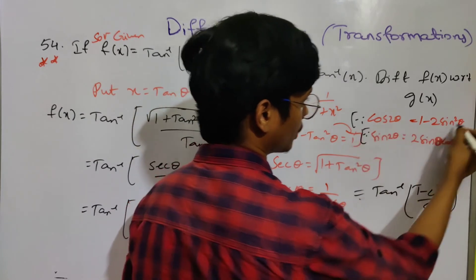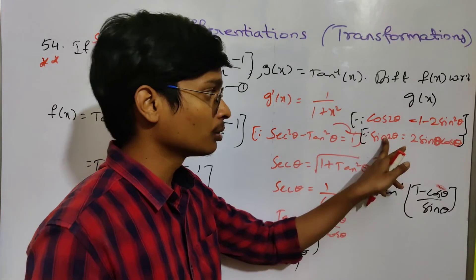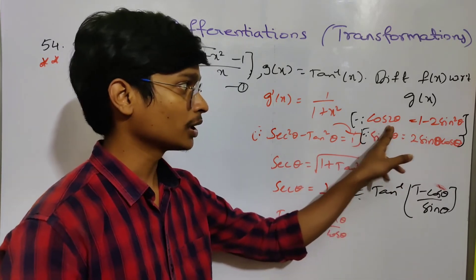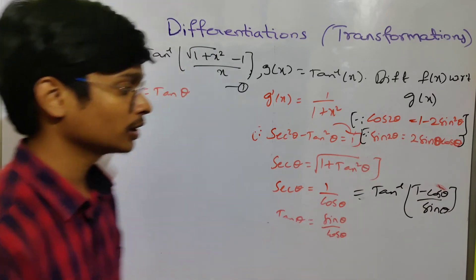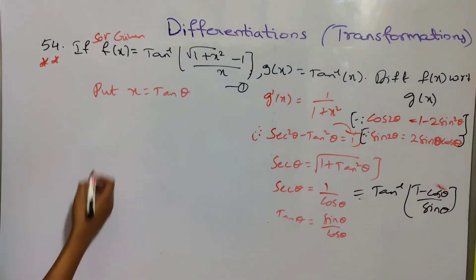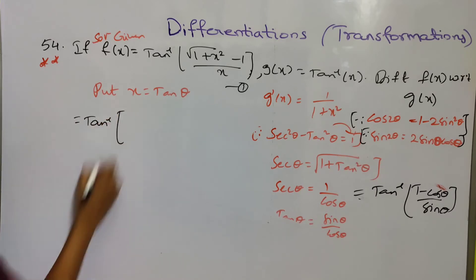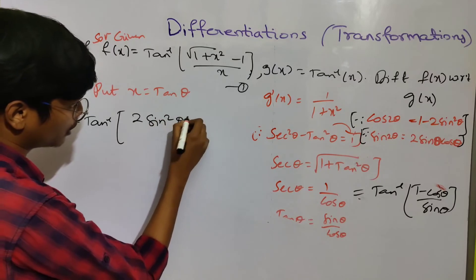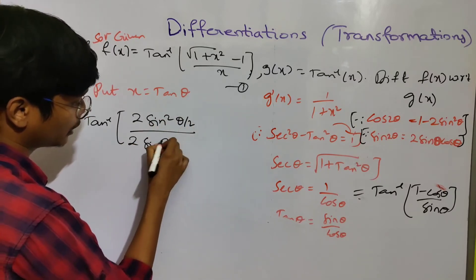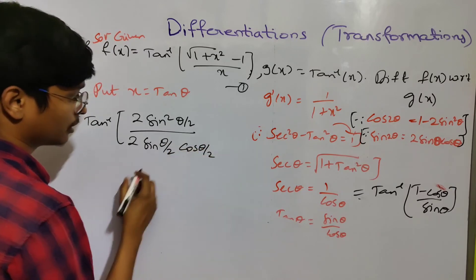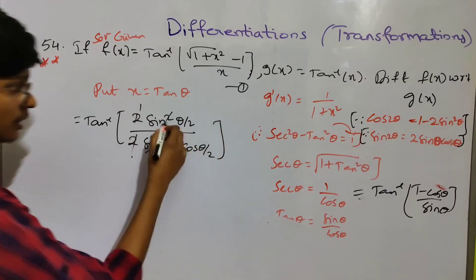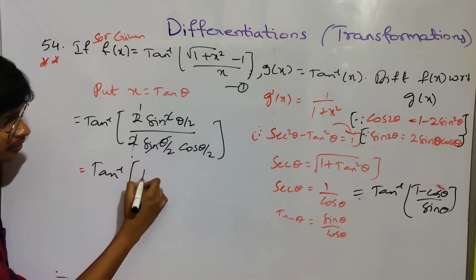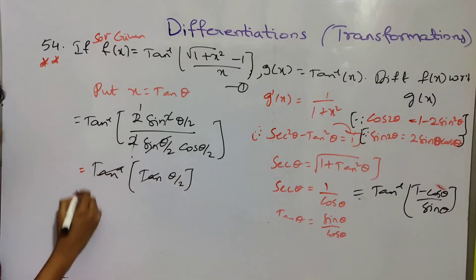This is 2 theta, this is theta, and this is the half angle. Using sin 2 theta equals 2 sin theta by 2 cos theta by 2, so 1 minus cos 2 theta equals 2 sin squared theta by 2. We get 2 sin squared theta by 2 divided by 2 sin theta by 2 cos theta by 2. Sin cancels and 2 cancels, giving sin theta by cos theta, which is tan theta by 2.